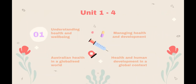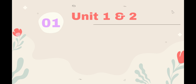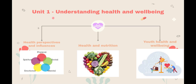We're going to have a look at Units 1 to 4 in a little bit more detail. Unit 1 is called Understanding Health and Well-Being and that looks at health perspectives and influences, focusing on the five dimensions of health, which are physical, social, mental, emotional and spiritual.